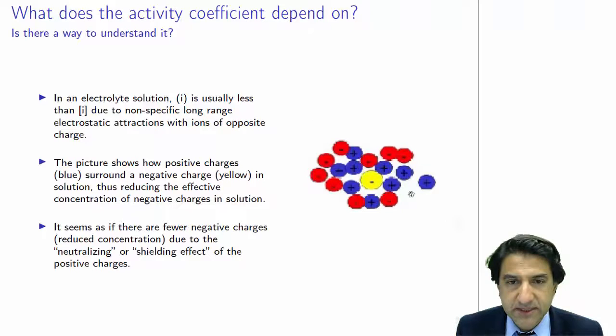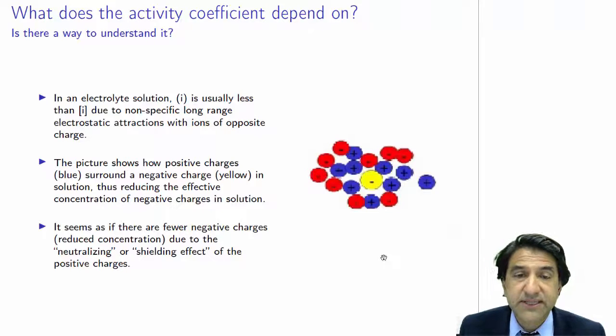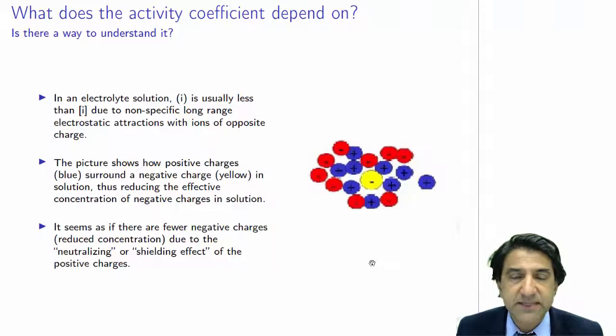Now, in an electrolyte solution like this, the activity of this species, we can call it i, so brackets i, that quantity brackets i, the activity, is usually less than the concentration. Why is that? Because most of the forces in chemistry are electrical forces. And activities are related to energies. Activities related to the K constant. The K constant is related to delta G, for example, by the Nernst equation. Delta G equals delta G0 plus RT ln K. Delta G are energies. So constant activities are somehow related to energies of interaction.